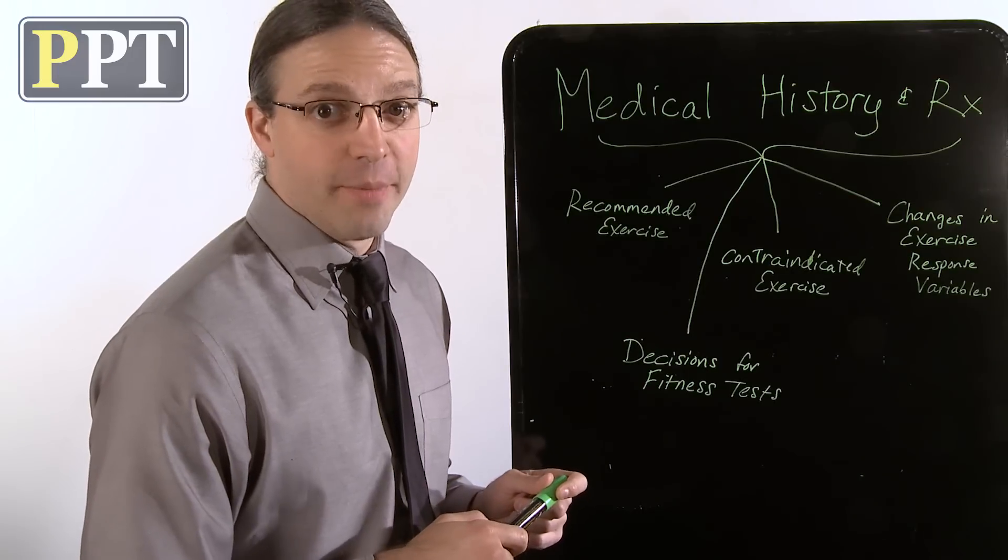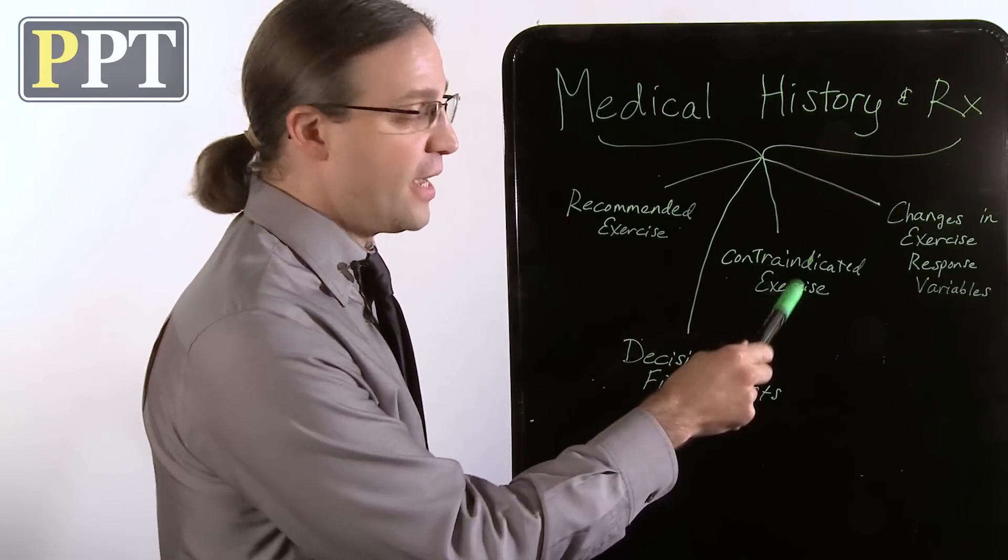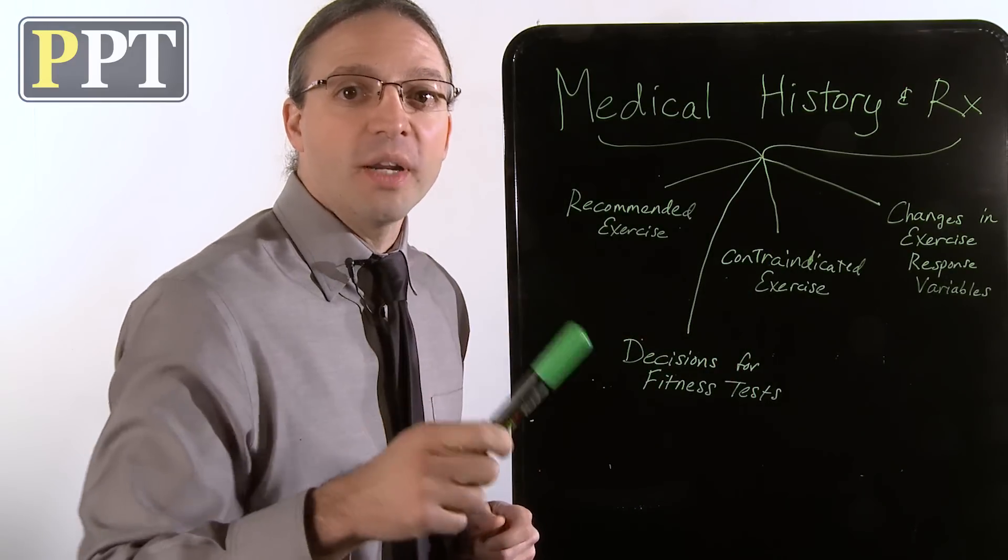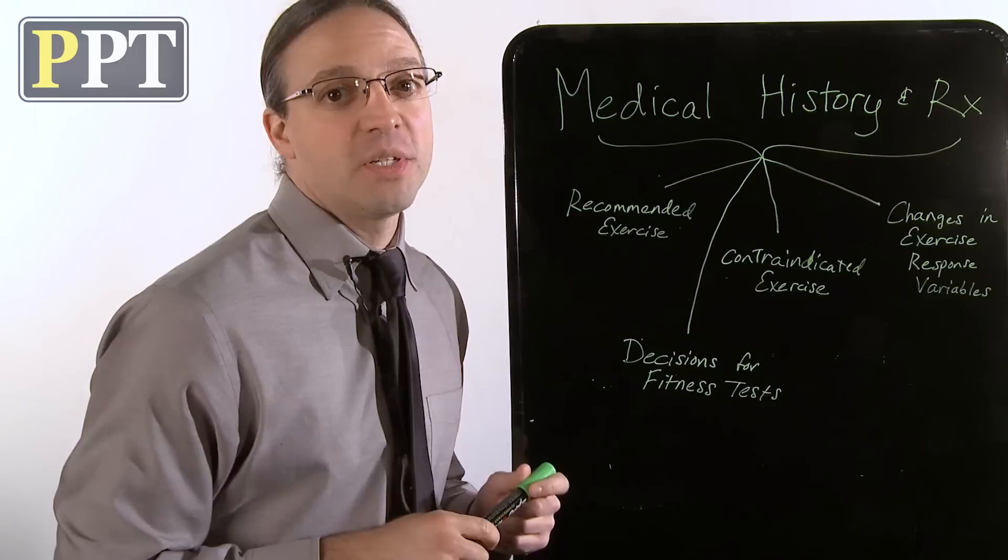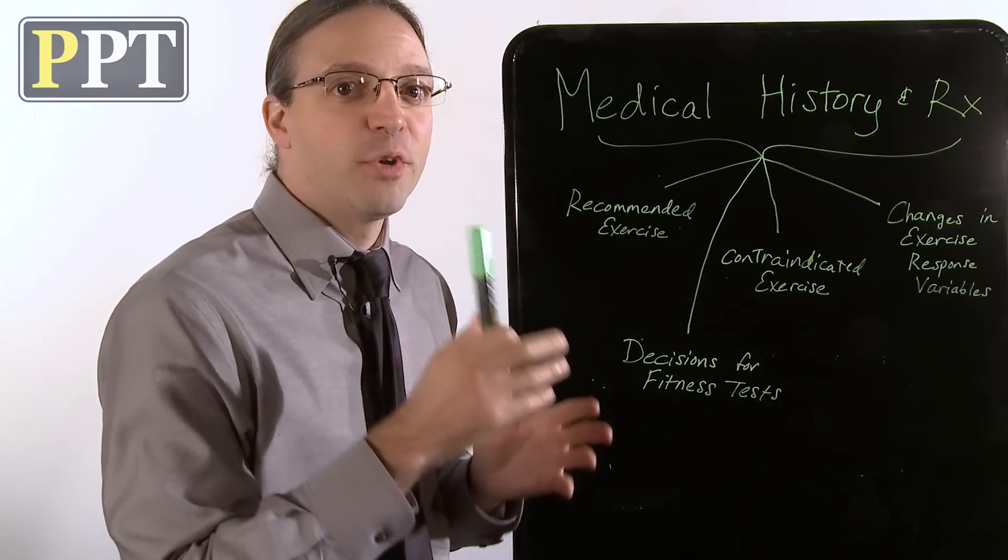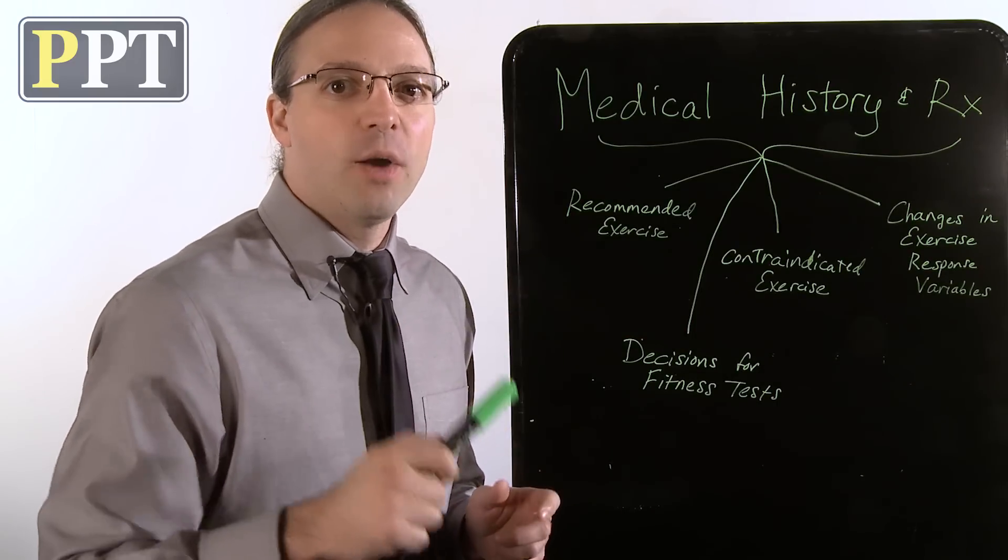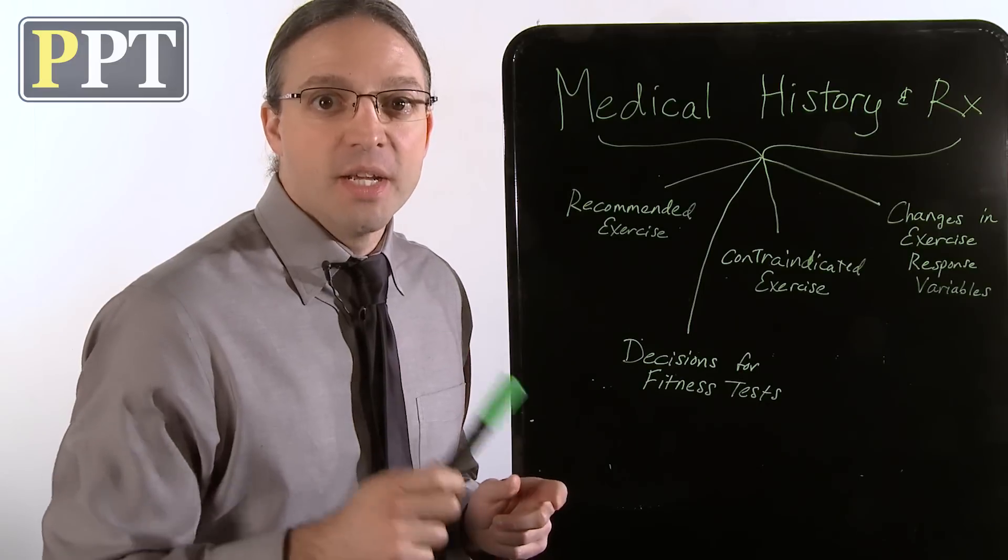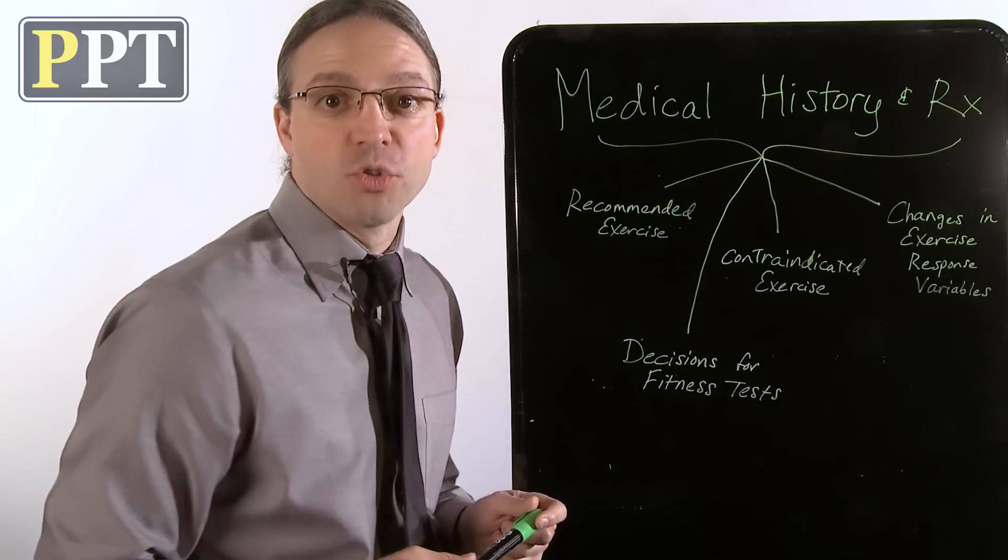Let's start with the client's medical history, where we not only determine contraindications to exercise, but we start getting clues as to how to split up our session time amongst the different elements of fitness and how exercise response can be affected, such as is the case with many prescription drugs, such as beta blockers.